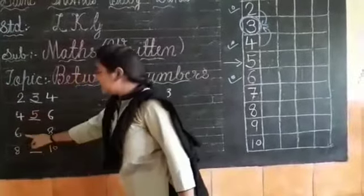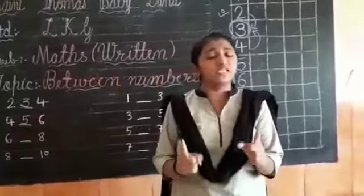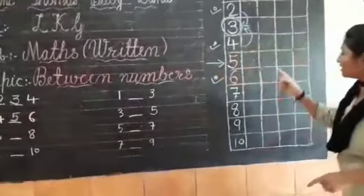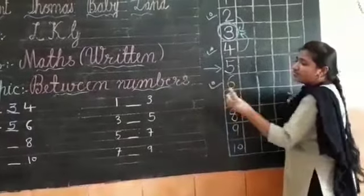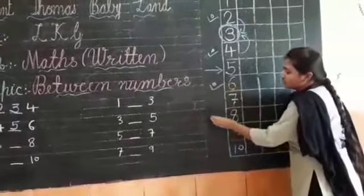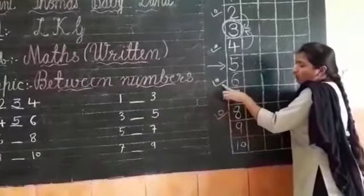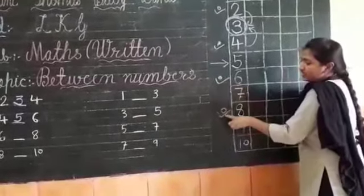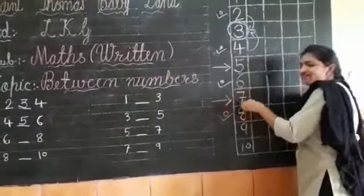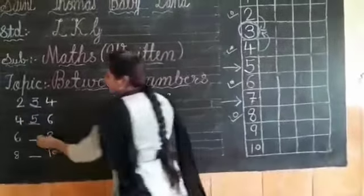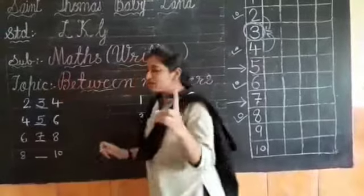Then six and eight — in between of six and eight. Where is six? Here is six. And where is eight? Here is eight. In between of six and eight, which number is there? There is seven. Here is seven.